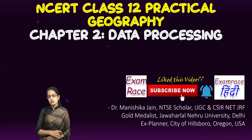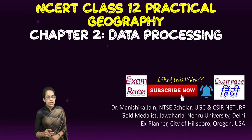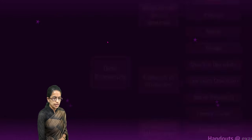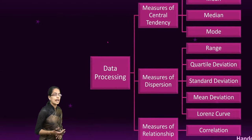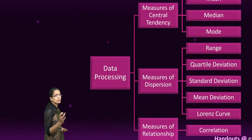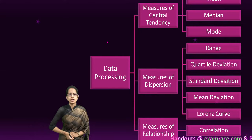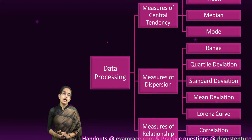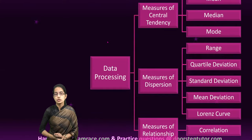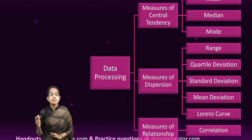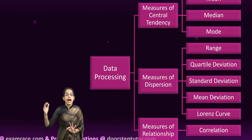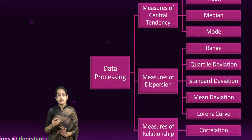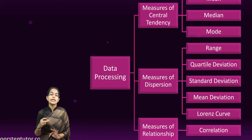Let's understand data processing, one of the very important and essential parts of statistics. In this section, we would understand how all data can be processed and why data processing is so important. So let's say you do a field survey and you collect questionnaire data of 20,000 people. Is it possible to actually understand and comprehend that data without doing data processing?